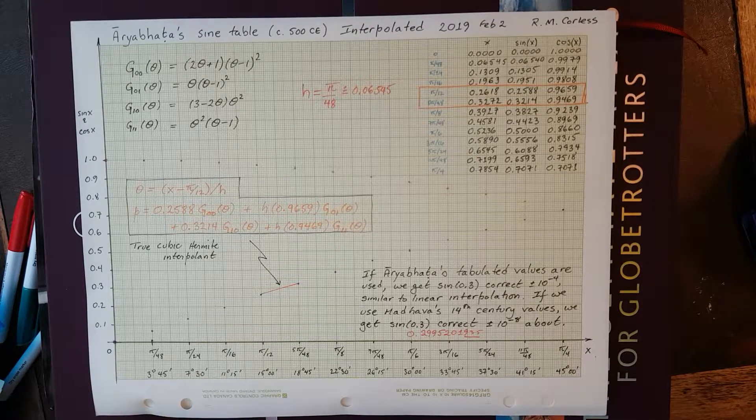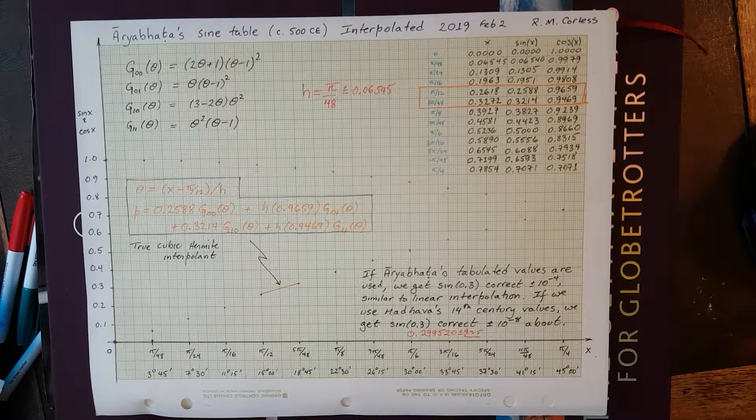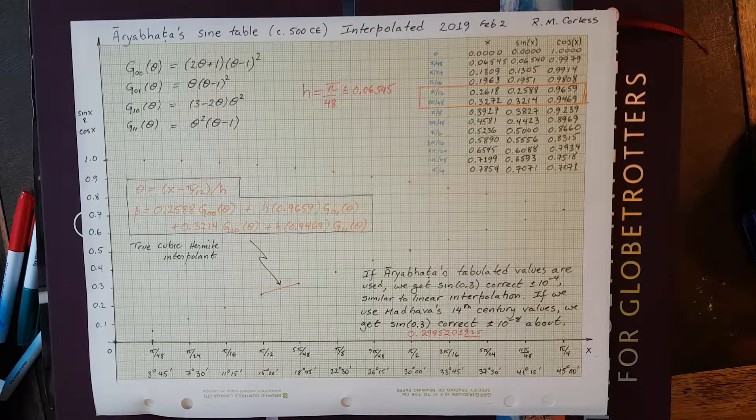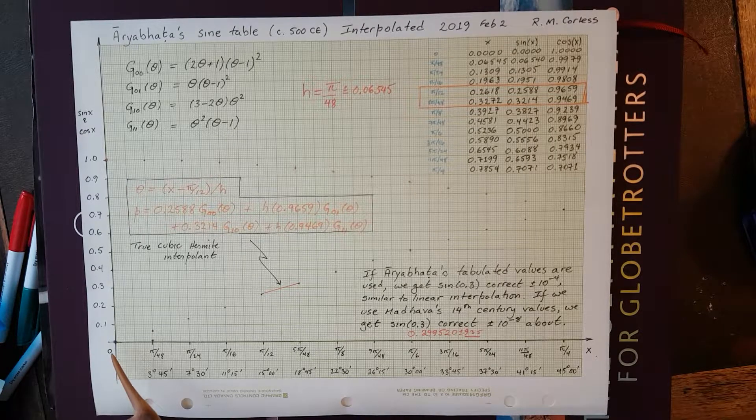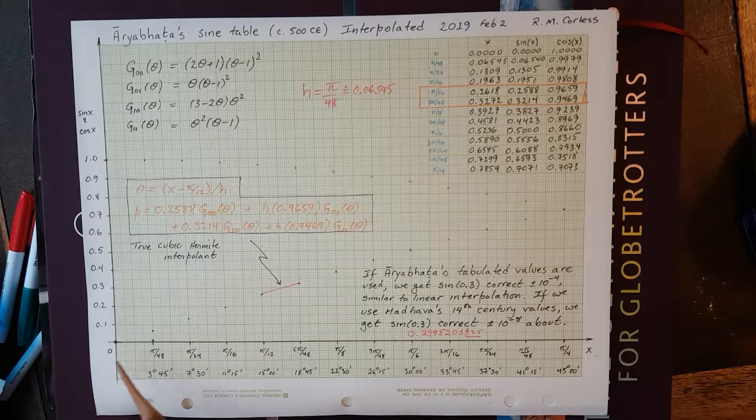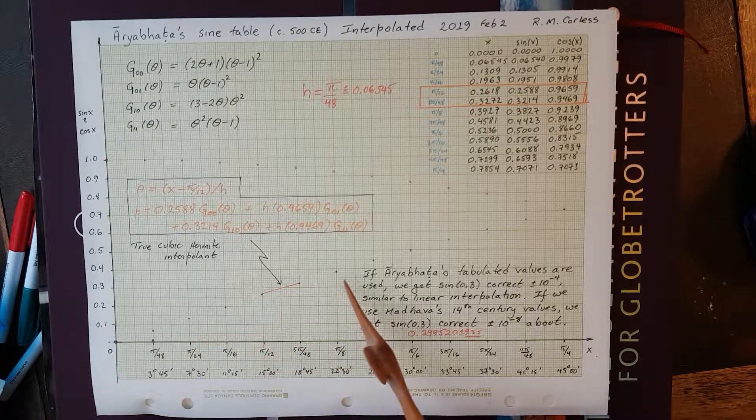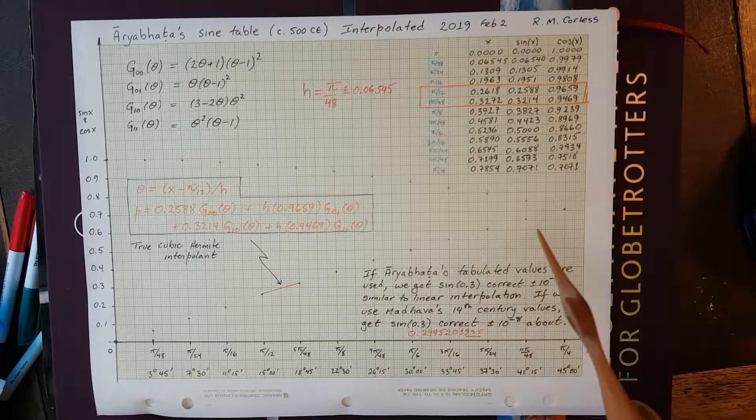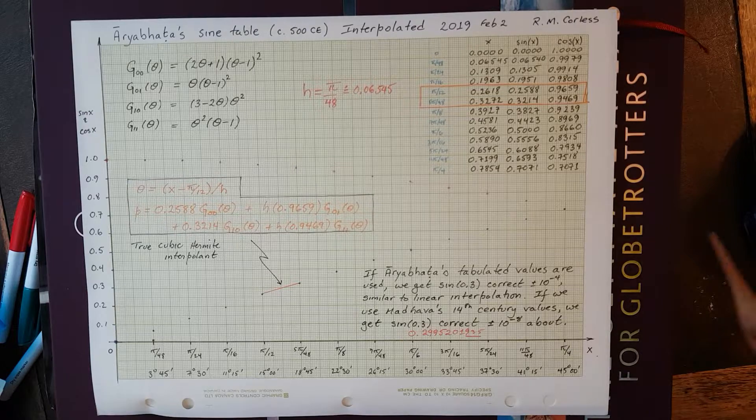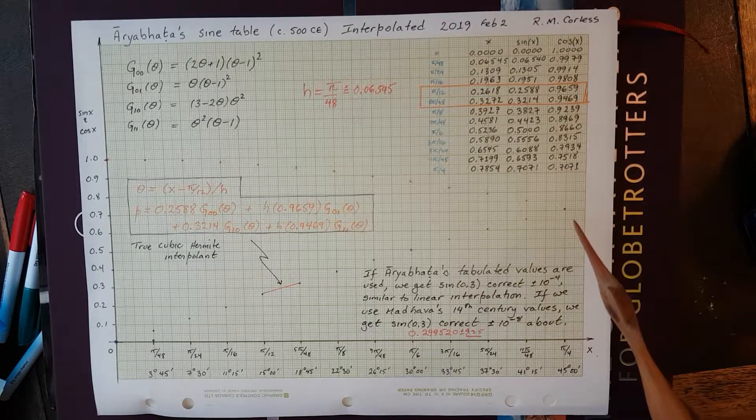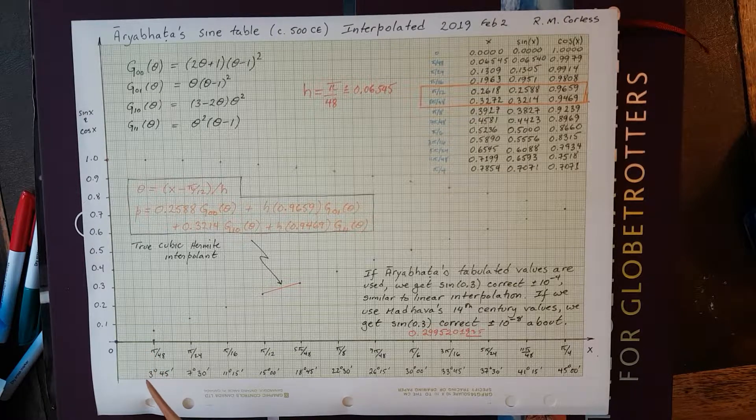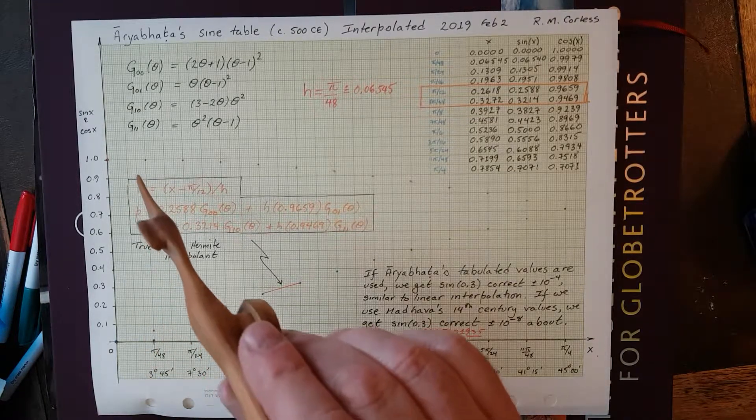What he had done was tabulate 24 values of essentially the sine function, and I've graphed those 24 values. I've actually added 0. He didn't bother to tabulate 0. Nobody needed to know that the sine of 0 was 0. But we have all of these values of the sine function. Now, he continued on as the sine function, but I'm folding it over as the cosine function because the sine of theta is the cosine of 90 minus theta.